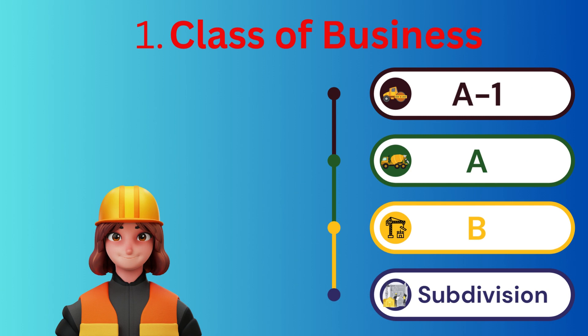The first factor in performance bond cost is class of business. The class of business refers to the type of work that is being bonded and the perceived risk associated with that type of work.